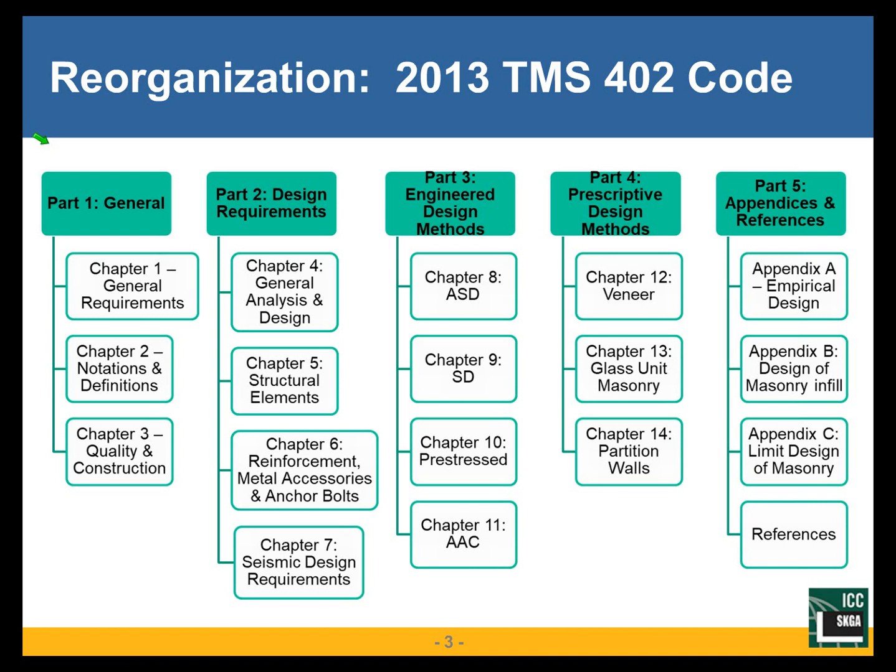Just a few brief code changes with the 2013 TMS 402 code. By the way, it used to be called the MSJC — Masonry Standards Joint Committee — but with 2016, ACI and ASCE graciously relinquished their rights to the code. So the 2016 version is actually just TMS 402, the Masonry Society 402. I'll use that nomenclature here.